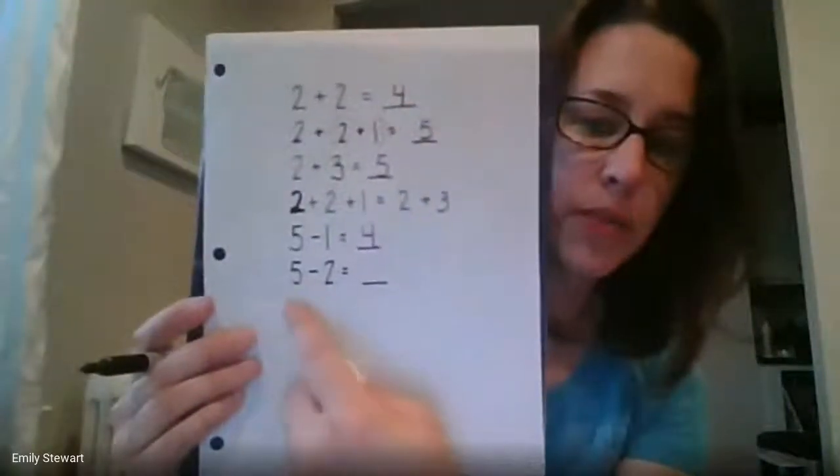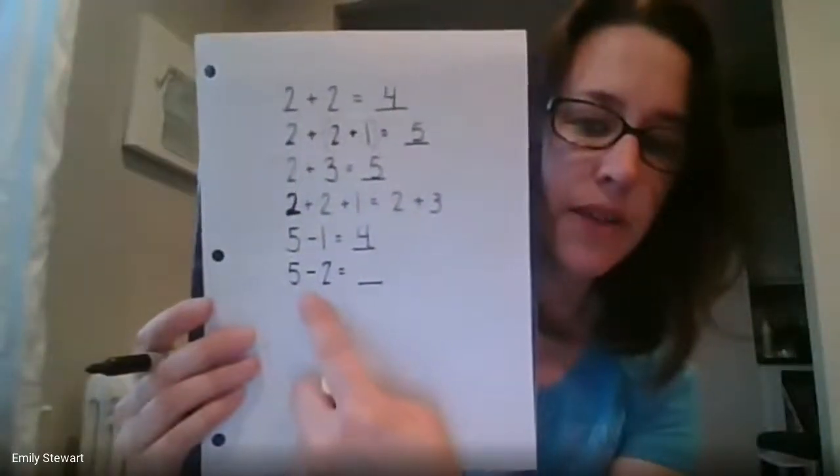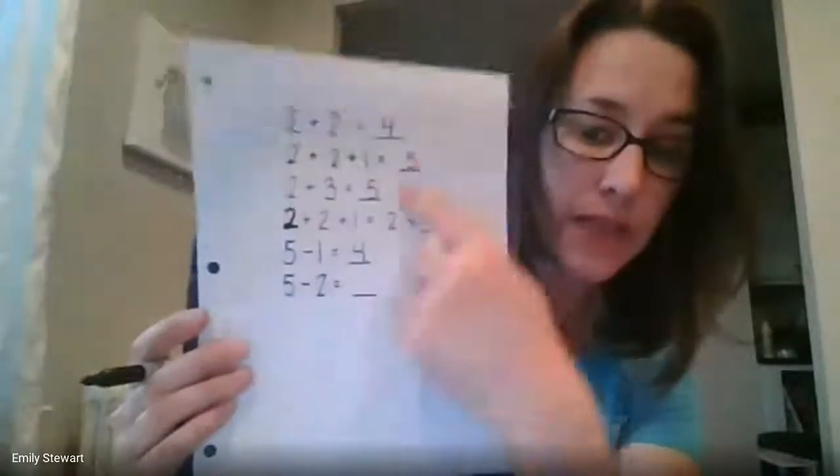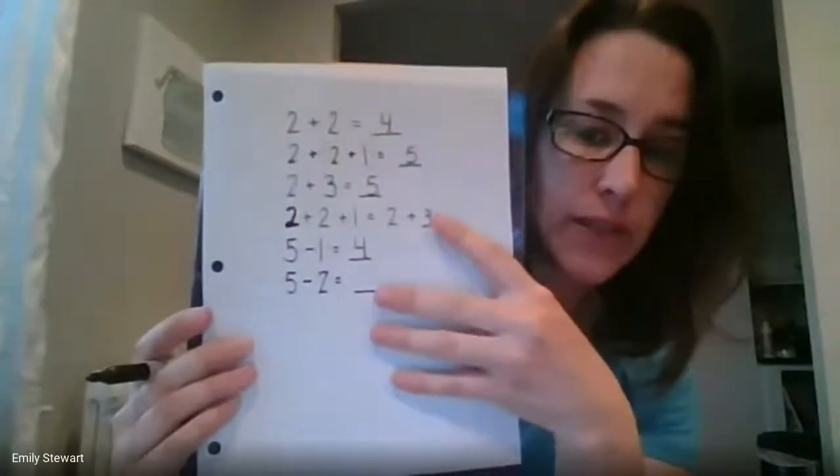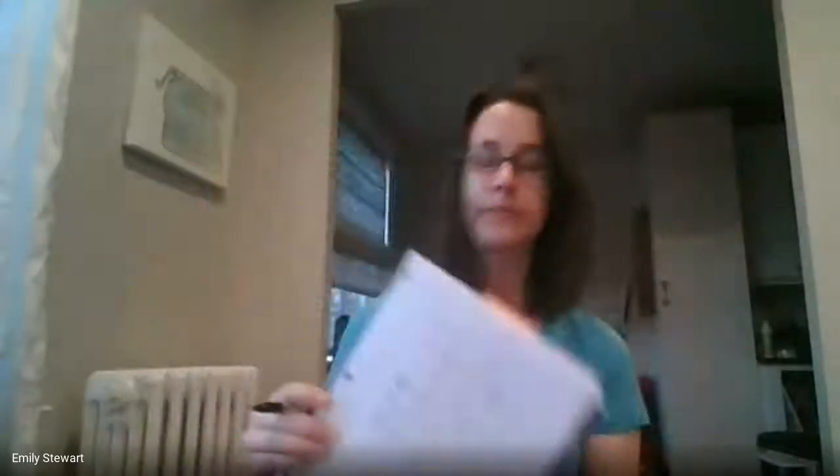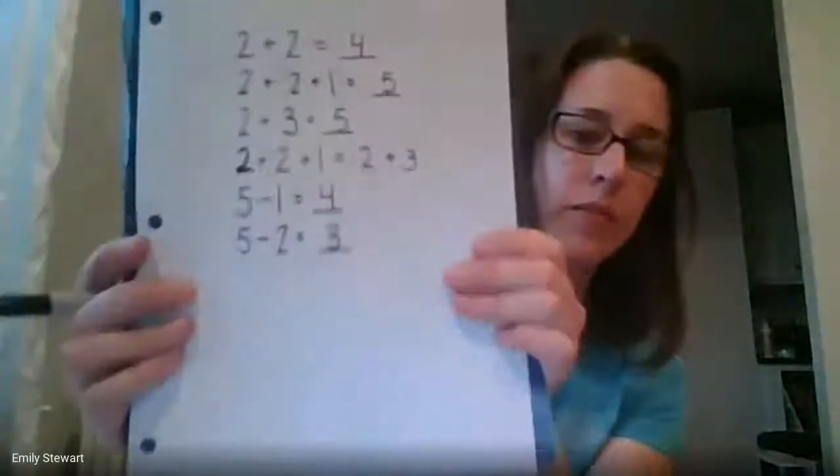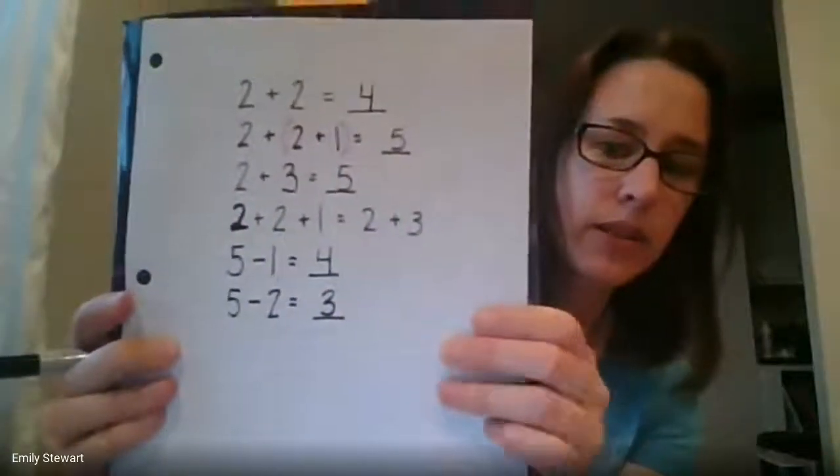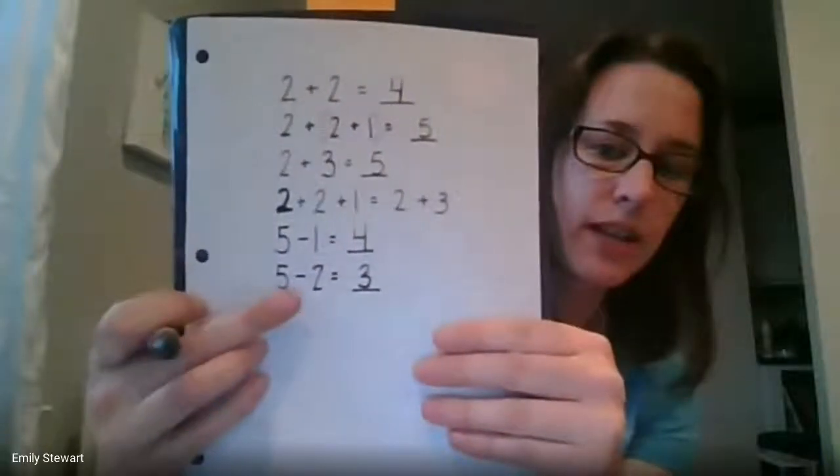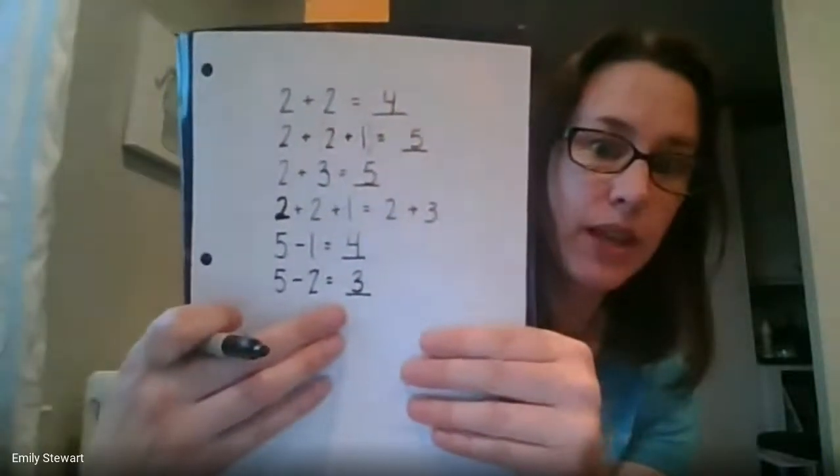Okay. Now what if I ate, instead of eating one gummy bear, what if I ate two gummy bears? So I do five minus two. How many would I have left? How many would I have left in my hand if I ate two gummy bears? All right. I'm going to hold up my paper. Let's see what you wrote down. Compare your answer to my answer. If I had five gummy bears in my hand and I ate two of them, I'd have three left.